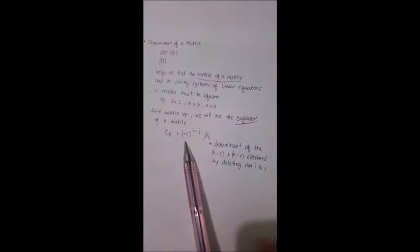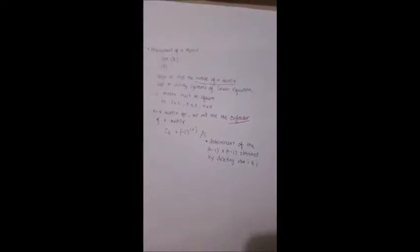This cofactor is given by this equation: equal to negative 1 raised to i plus j, i is your column, and j is your row, multiplied by beta ij. Beta ij is the determinant of the n minus 1 by n minus 1 obtained by deleting row i and column j.